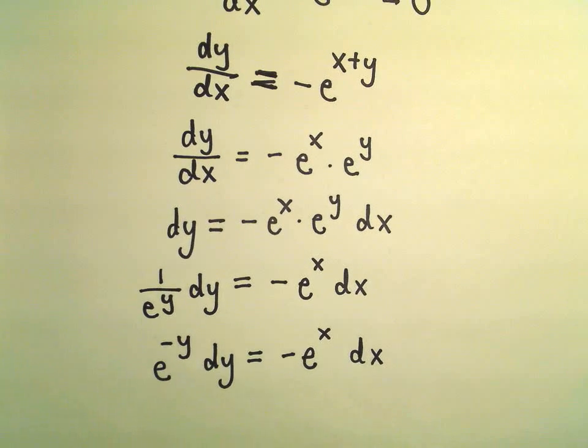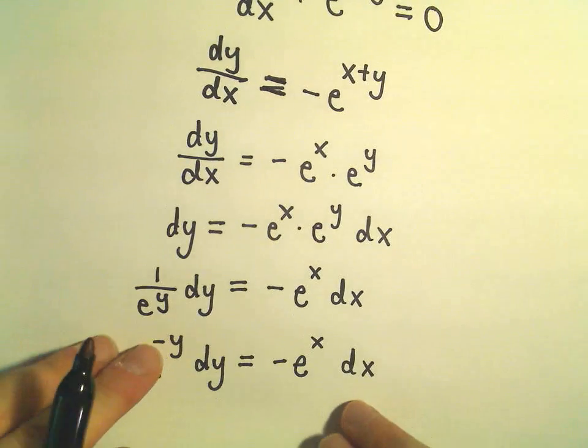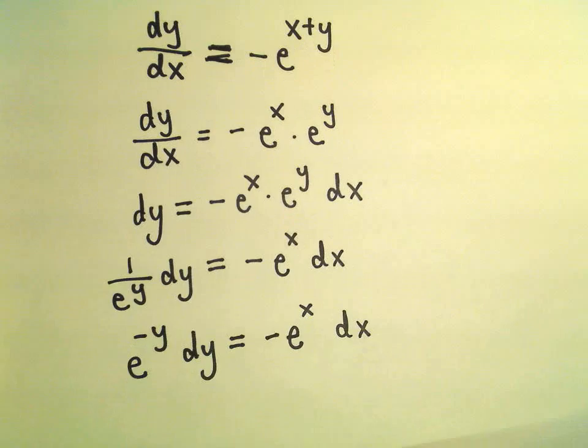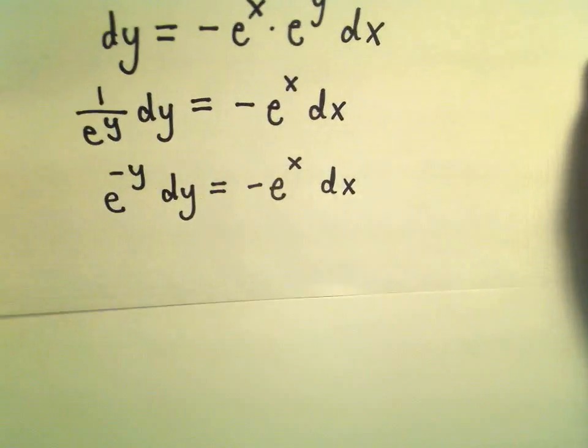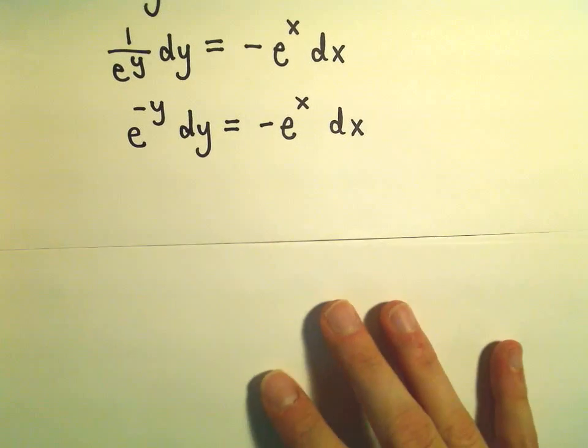And now this is kind of a good place. Things are separated out. We've got our y's on one side. We've got our x's on the other. So now we're just simply going to have to integrate both sides.